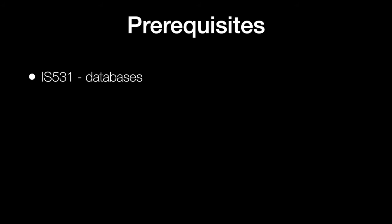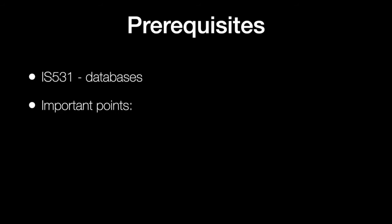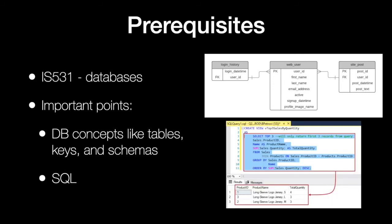There's also IS-531, which is a databases course. The important concepts that will be helpful here are things like tables, keys, and schemas. It will be useful to have an idea of this kind of structure, especially for evaluating structured data, semi-structured data like JSON, or converting unstructured data like text into semi- or fully-structured data. The schema idea and the idea of keys will be helpful, as will some familiarity with SQL, though that's not entirely critical for this class.